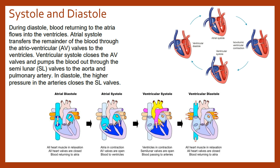Next is ventricular systole. When the ventricles are full of blood, the AV valves will close to prevent backflow, the ventricle walls contract, and the blood is pushed out of the left and right ventricle into the pulmonary artery and the aorta — through those semi-lunar valves, the aortic valve and the pulmonary valve.